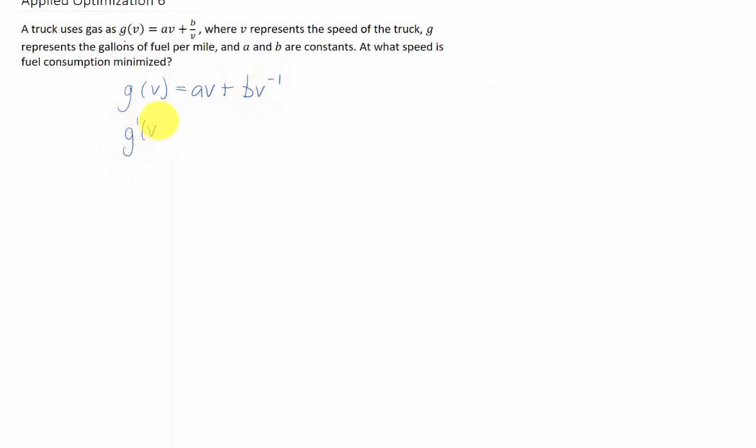Now we can take a derivative. Because a is a constant, the derivative of av with respect to v is just a, and the derivative here is going to be negative bv to the negative 2.